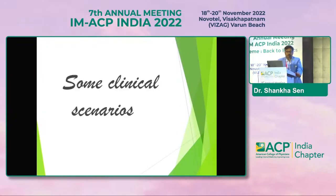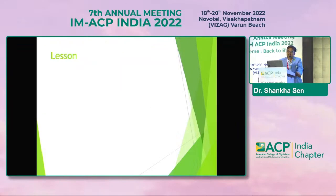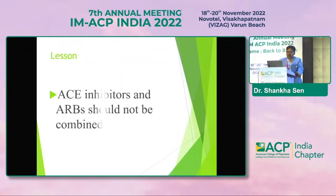In Scenario 1, a 60-year-old gentleman with congestive cardiac failure was on ramipril, developed proteinuria, and was started on an ARB. Serum creatinine levels started rising from the next day. The lesson is clear: ACE inhibitors and ARBs should never be used together.